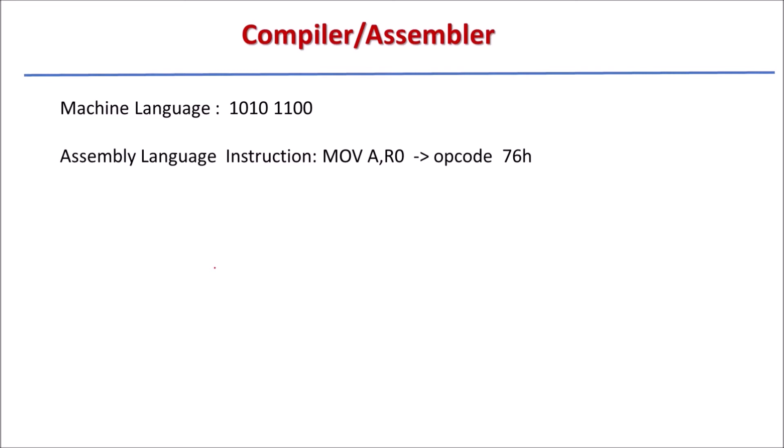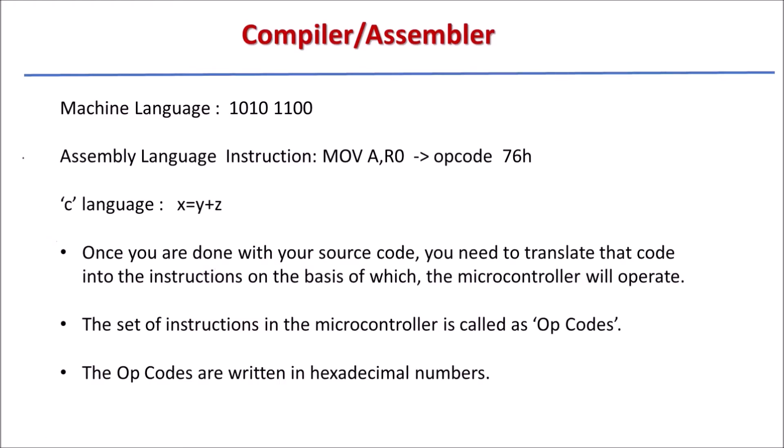We need an assembler which converts assembly language instructions into machine level language. Similarly, we may write programs in embedded C language using different C instructions, but the microcontroller won't understand them directly. The software which converts embedded C instructions or higher level language instructions into machine level language is called a compiler. So the compiler is used for embedded C, and the assembler is used for assembly language programs.